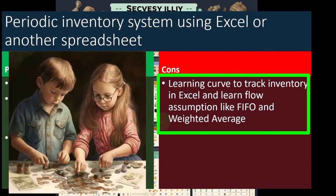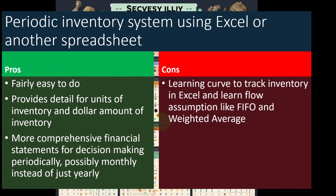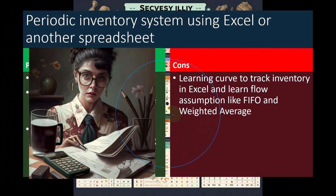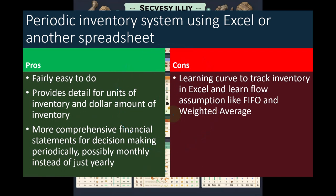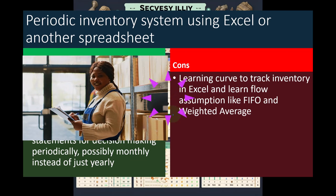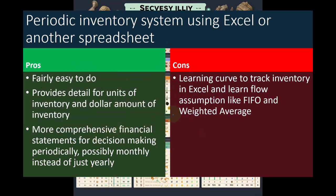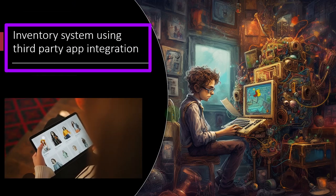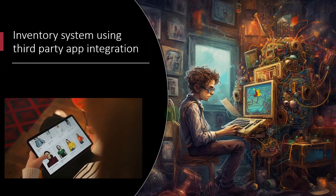On the cons side: there's a learning curve to tracking inventory in Excel and learning flow assumptions like FIFO and weighted average. You'll need Excel skills to do the calculations for monthly adjusting entries into QuickBooks, and you'll need to apply a flow assumption since inventory value typically changes. For example, the same widget might cost $20 today and $22 tomorrow, so when you sell inventory you have a valuation problem — you need to determine the cost of each unit sold when they were purchased at different prices due to inflation or other factors.